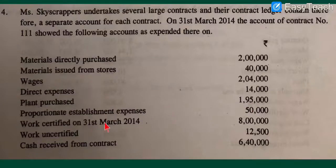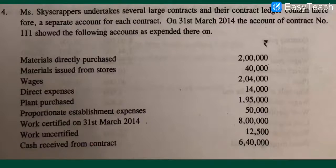Work certified on 31st March 2014, that is the closing date: 8 lakh. Work uncertified: 12,500. Cash received from the contractee: 6 lakh 40,000.